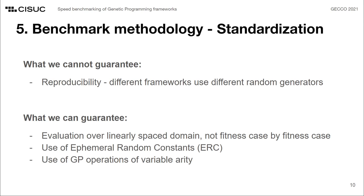Genetic programming entails stochastic processes that are simulated using random number generators, which are application-specific. What this means is that experimental runs running in different engines will inevitably follow distinct evolutionary paths, and consequently perform a different number of genetic programming operations, which in turn affects computational times. However, in an effort to level the playing field and achieve comparable results, some modifications were made to the existing frameworks regarding features we can control. First, all frameworks were modified to evaluate over a linear space domain of data points, in order to ease the evaluation of the larger domains in our experimentation.